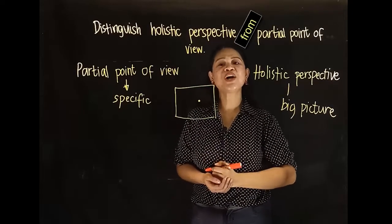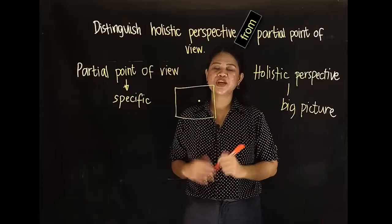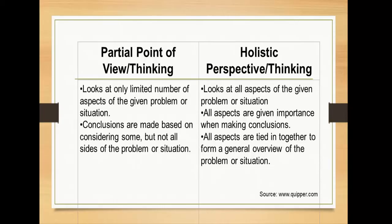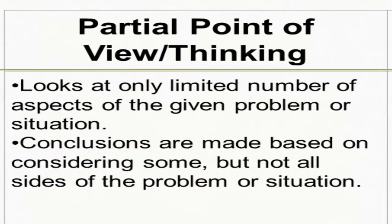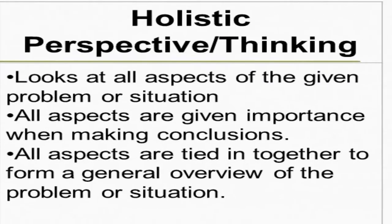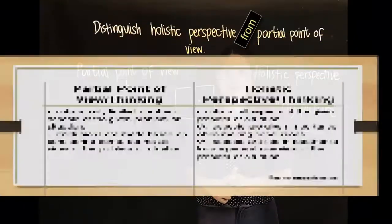So in order to understand it better, let's scrutinize the two perspectives. In partial point of view, it looks at only a limited number of aspects of the given problem or situation, but not all sides. In holistic perspective, it looks at all aspects of the given problem or situation — all aspects are given importance when making conclusions and are tied together to form a general overview of the problem or situation.